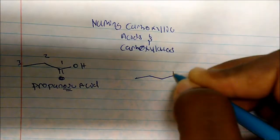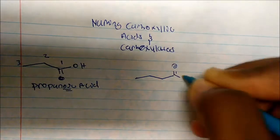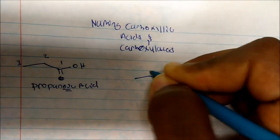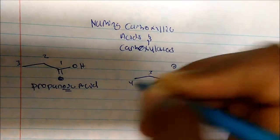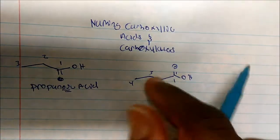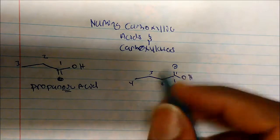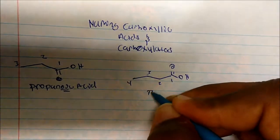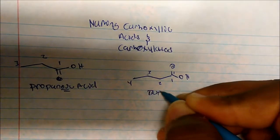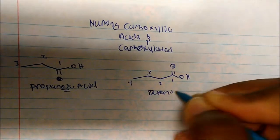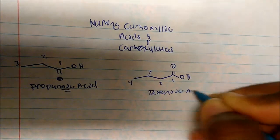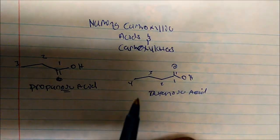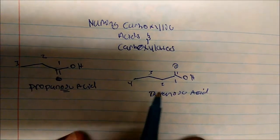How do we name this molecule? Again, carbon 1, 2, 3, 4 — so usually we say this is butane, but because it's a carboxylic acid, we say this is butanoic acid.